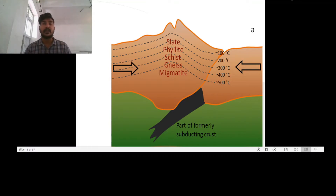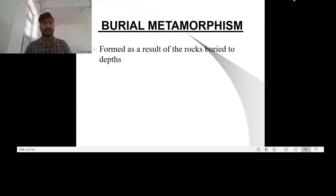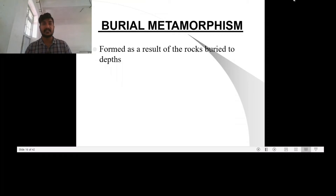The next type is burial metamorphism. When sedimentary rocks are buried to depths of several kilometers, temperatures greater than 300 degrees Celsius develop in the absence of differential stress. New minerals begin to grow but the rock does not appear to be metamorphosed. The main minerals produced are often zeolites. Burial metamorphism overlaps to some extent with diagenesis and grades into regional metamorphism as temperature and pressure increase. It takes place at relatively low temperature around 300 degrees Celsius and low pressure. One example of a rock formed in this setting is a metaconglomerate, which looks like a regular conglomerate except the clasts have become very elongated.